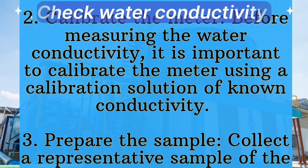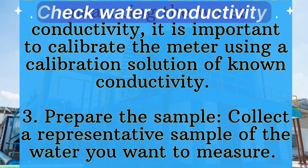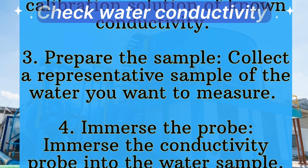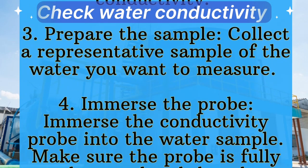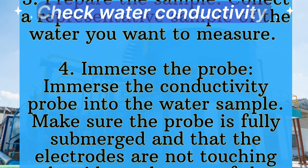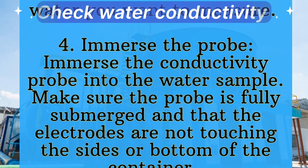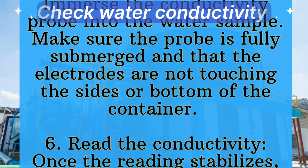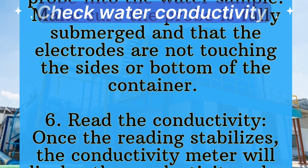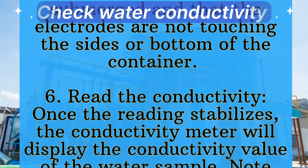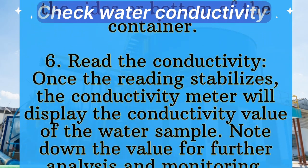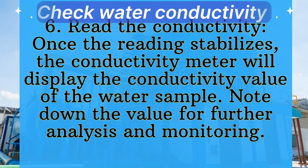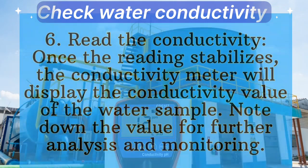Step 3: Prepare the sample. Collect a representative sample of the water you want to measure. Step 4: Immerse the probe. Immerse the conductivity probe into the water sample. Make sure the probe is fully submerged and that the electrodes are not touching the sides or bottom of the container. Step 6: Read the conductivity. Once the readings stabilize, the conductivity meter will display the conductivity value of the water sample. Note down the value for further analysis and monitoring.